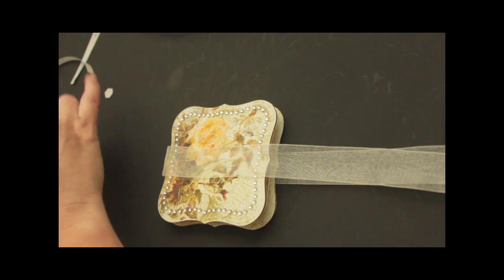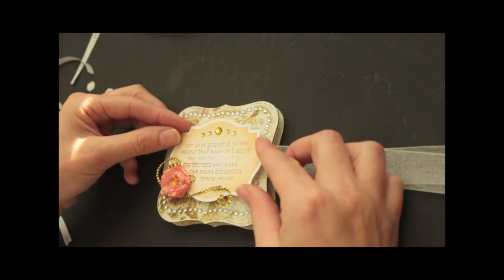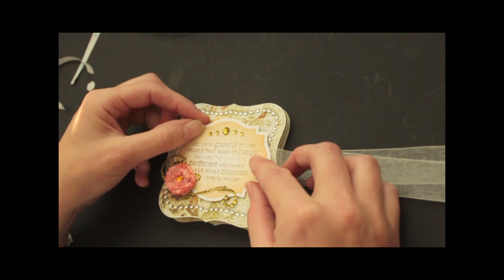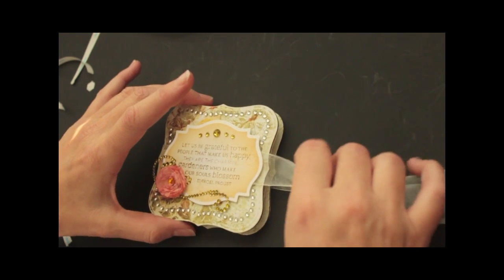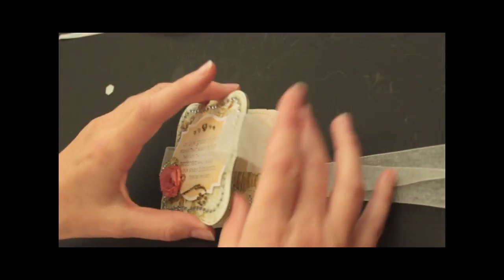The rhinestones on there are also from Want to Scrap. I cut a swirl apart. And because I didn't have the right color for this to match the paper, I used Copic Marker YG97 to color it. And now all you have to do is tie this shut.